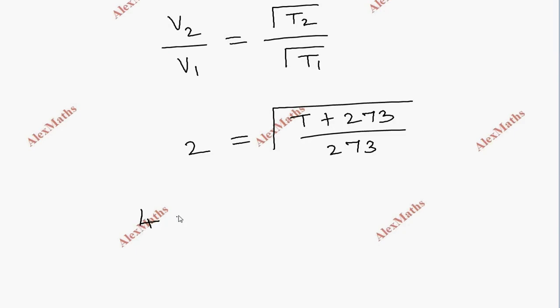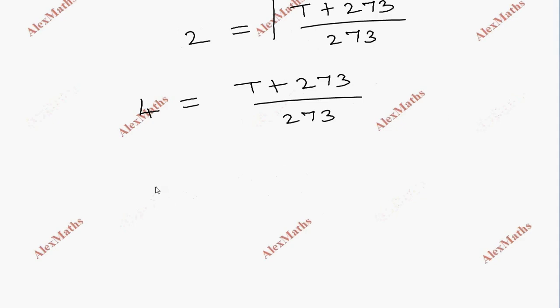Cross multiplying, T plus 273 equals 273 times 4, which equals 1092.